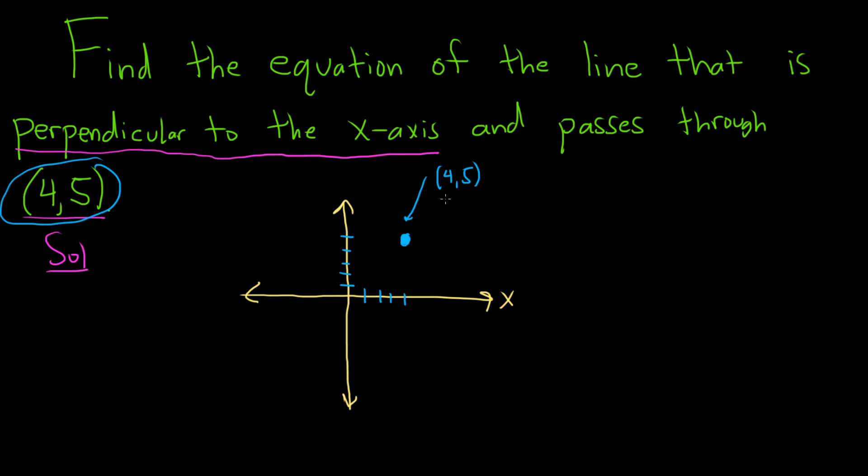But it also has to pass through (4,5). That means this here must be the line—this blue line. This must be it because it makes a 90-degree angle.